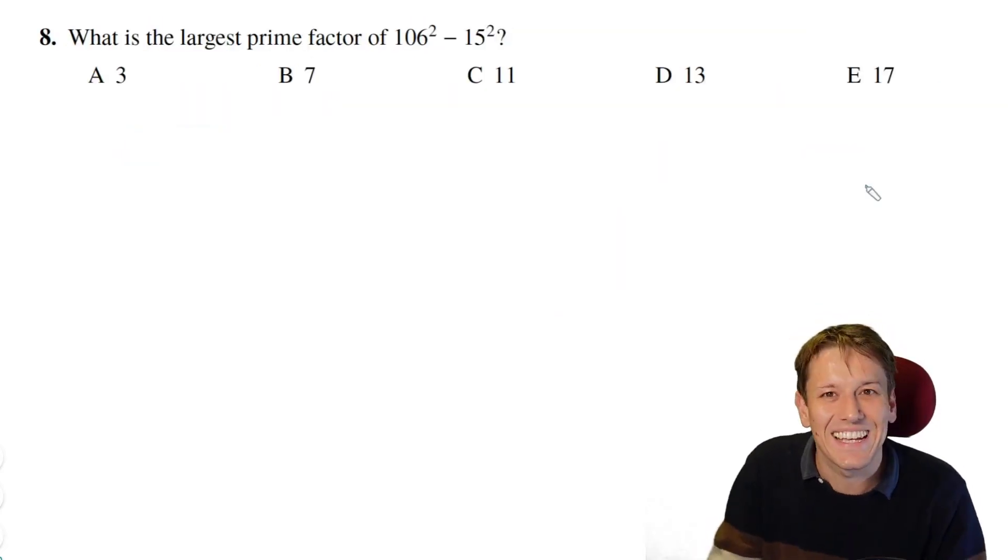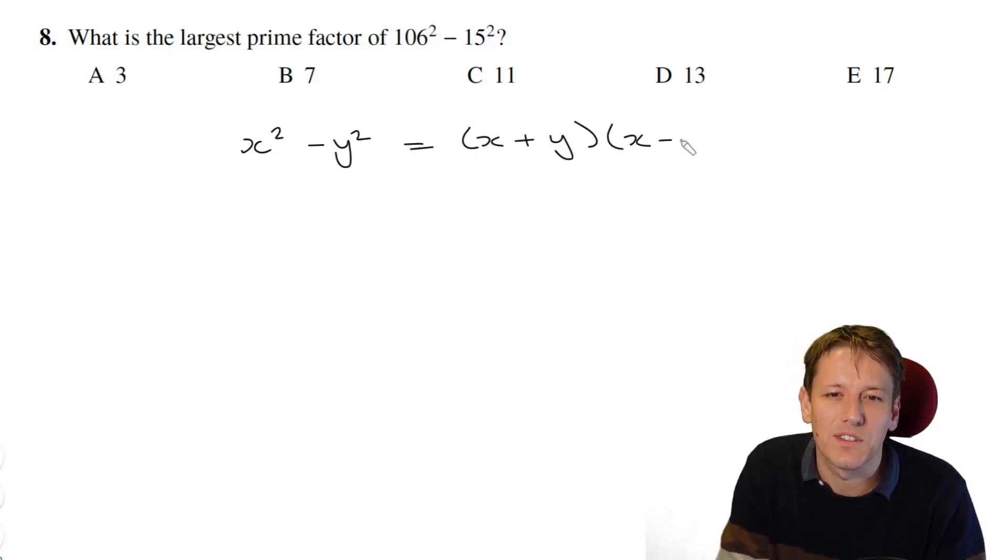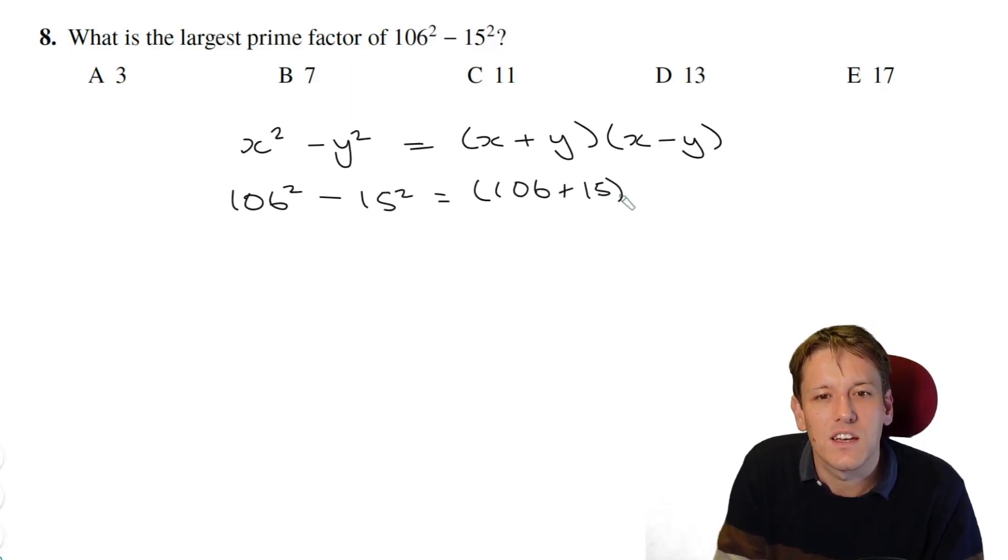I've got a classic maths challenge question here, what's the largest prime factor of 106 squared minus 15 squared? Of course, we're meant to rely on the difference of two squares formula here that says that x squared minus y squared is x plus y times x minus y, giving us a nice factorization of the result here. So if I take 106 squared minus 15 squared, that's the same as 106 plus 15 times 106 minus 15, that gives me 121 multiplied by 91.